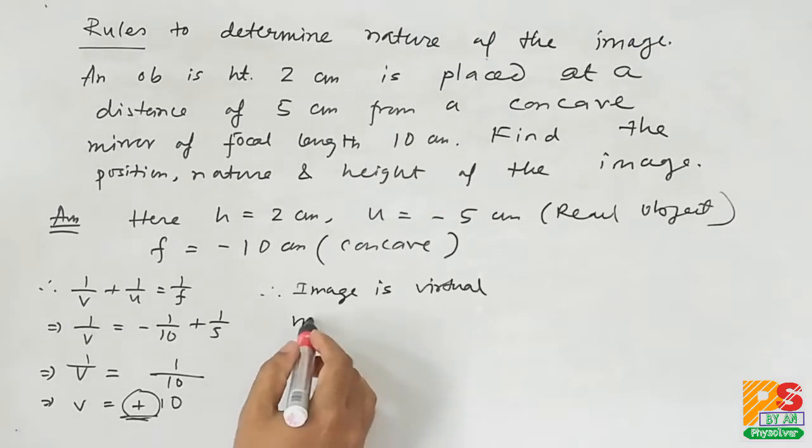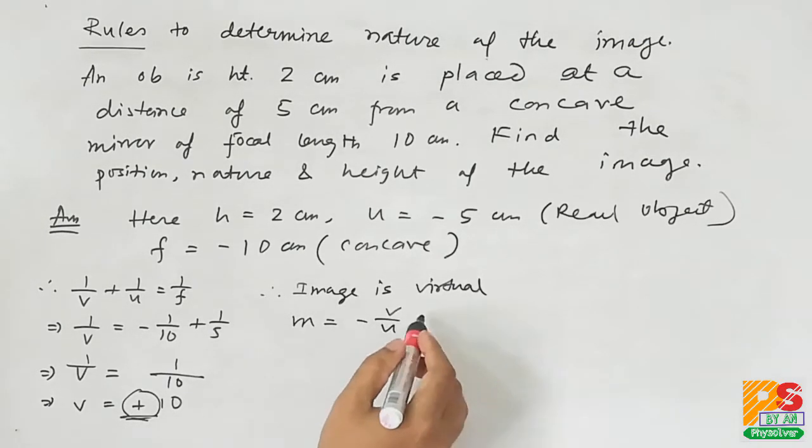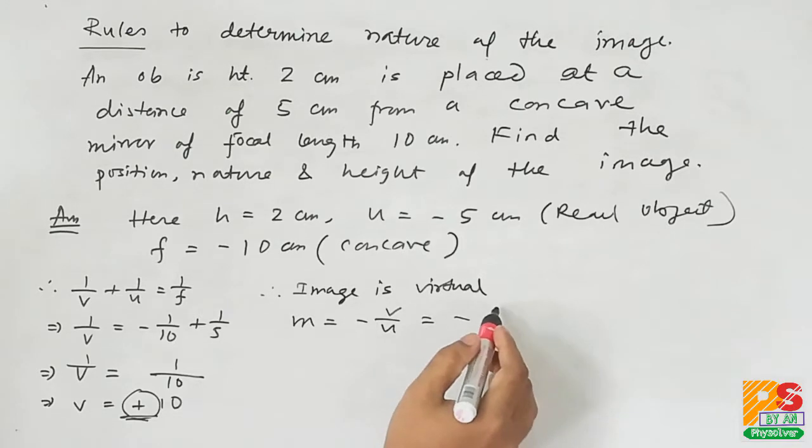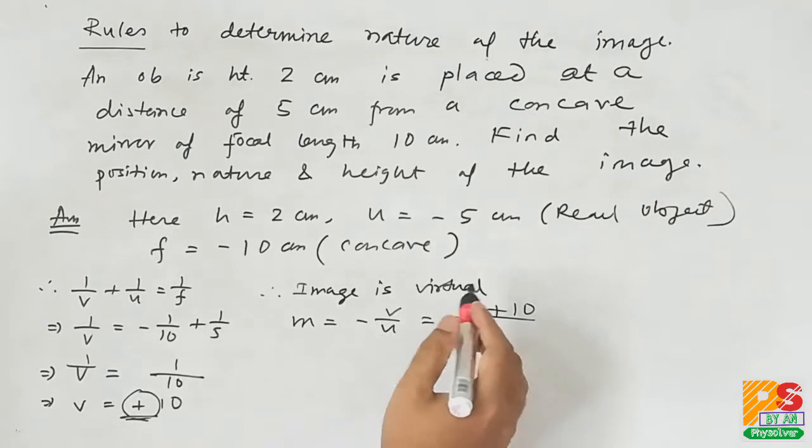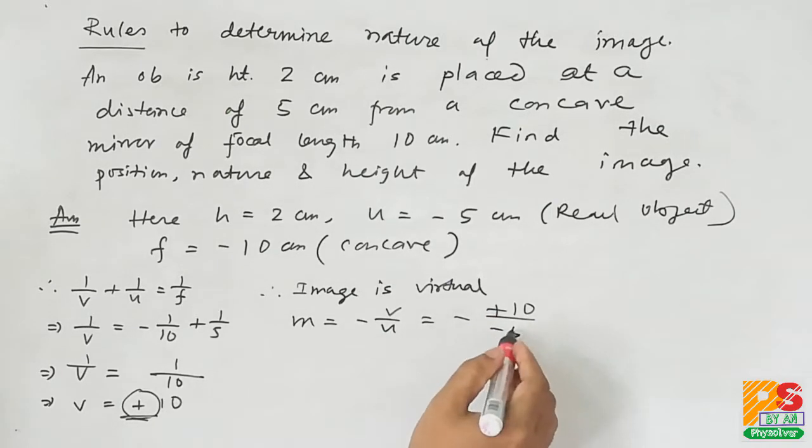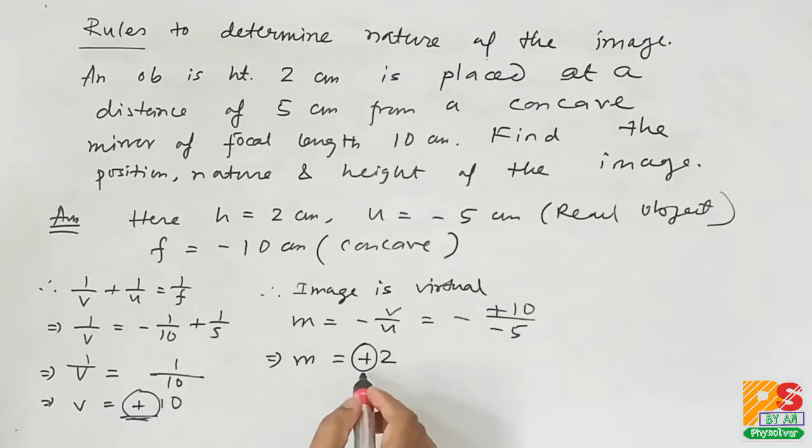This is the first nature. Second, we have to find magnification. Formula is minus V by U. Putting the values, we will get plus 2. The plus sign indicates that the image is erect.